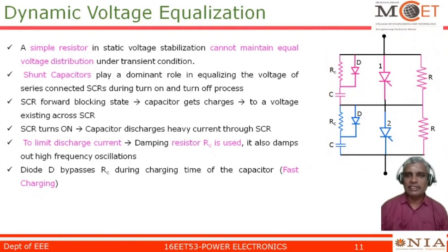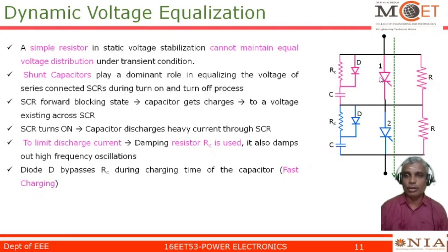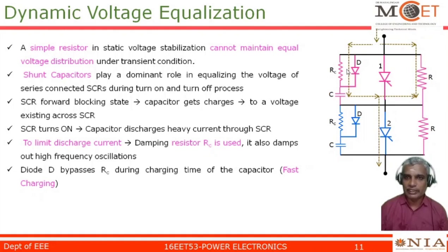Let us assume that once the SCR has been turned on, the current will start flowing in this direction. These two resistances will take care of the voltage distribution of these two thyristors. But during the instant before it is turned on or it is going to turn off, if we use these capacitances and resistances across the SCR with this diode, the current will start flowing in this direction and it will try to charge this capacitor. These two capacitances will get charged.